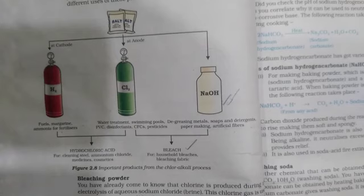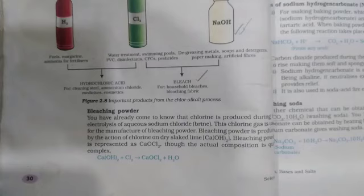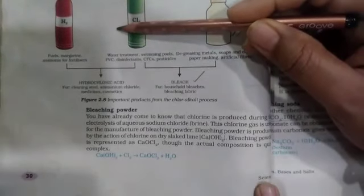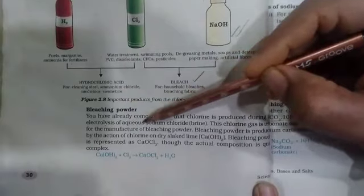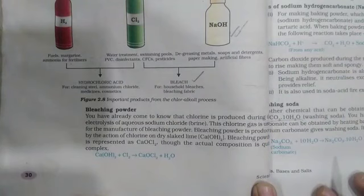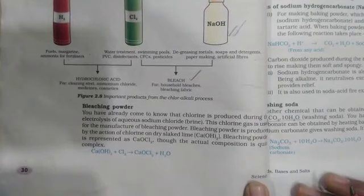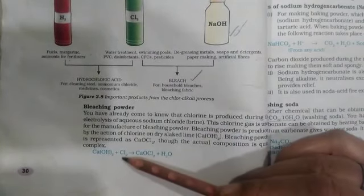Now we will discuss bleaching powder. The chemical name of bleaching powder is calcium oxychloride. The chlorine produced during the chloralkali process — during electrolysis of aqueous sodium chloride (brine) — is used for the manufacturing of bleaching powder. Bleaching powder is produced by the action of chlorine on slaked lime.